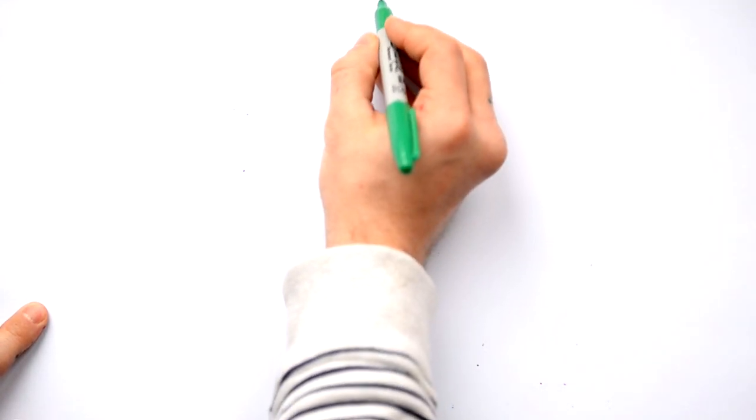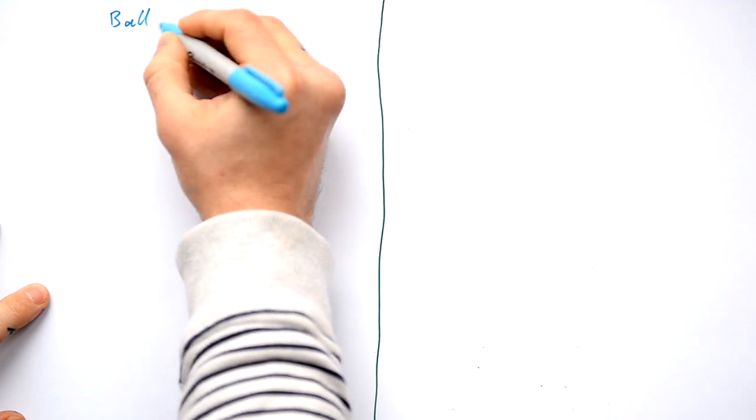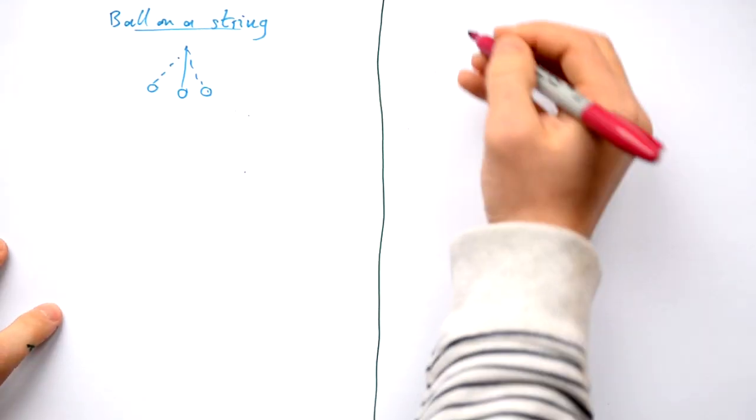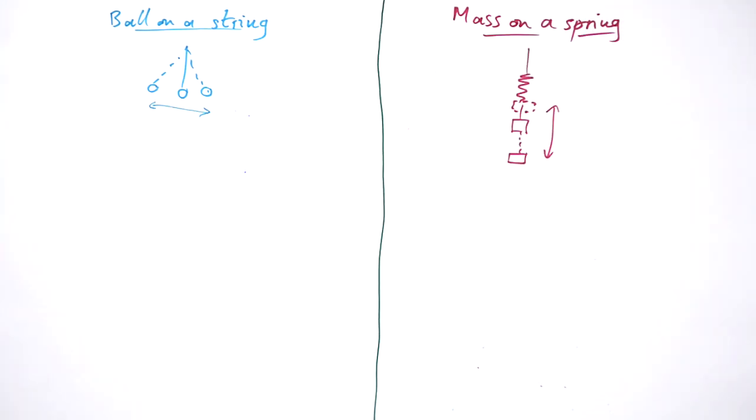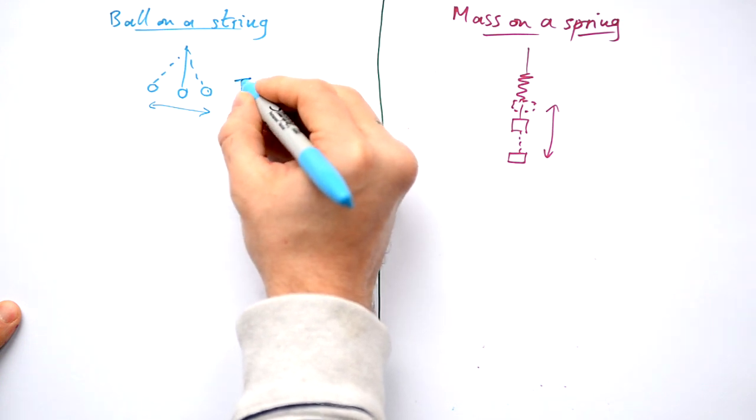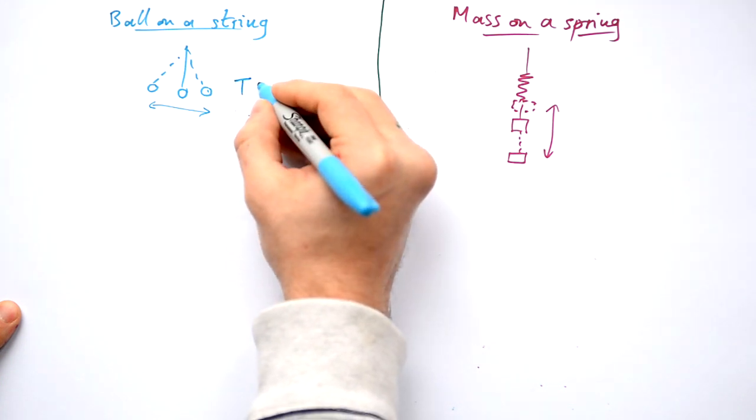So let's talk about two specific cases of SHM. First of all, we have ball on a string, and you've seen that already. We're also gonna be looking at mass on a spring. Now there are some people who claim that all physics can be summed up with balls on strings and mass on springs. And to be honest, they're kind of right. A heck of a lot of physics and the physical world relies on simple harmonic motion. Now you don't need to know how to derive these. You're given these equations for the time period for each of these.